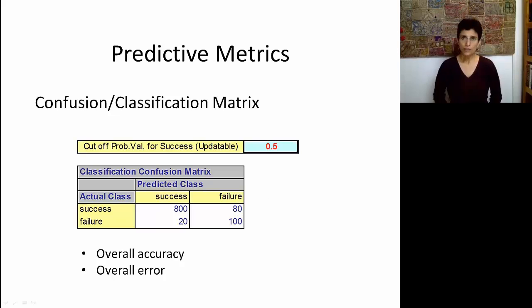There are also metrics that are based on these four numbers. For example, overall accuracy, which is a popular metric, simply looks at how well our algorithm did. It looks at the 800, and it looks at the 100. So the overall accuracy is 900 divided by the total, which is 1000. We can also be pessimistic and look at how bad our algorithm is, and say, well, it failed on these 80 and on these 20. So our overall error is 100 divided by 1000.